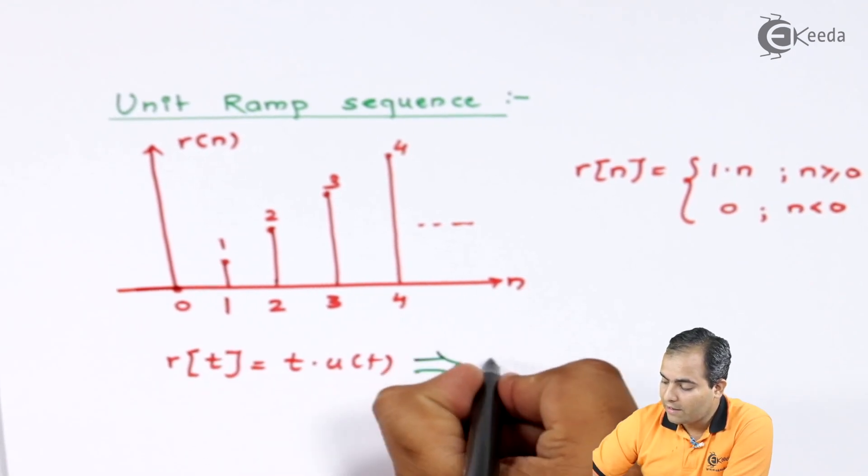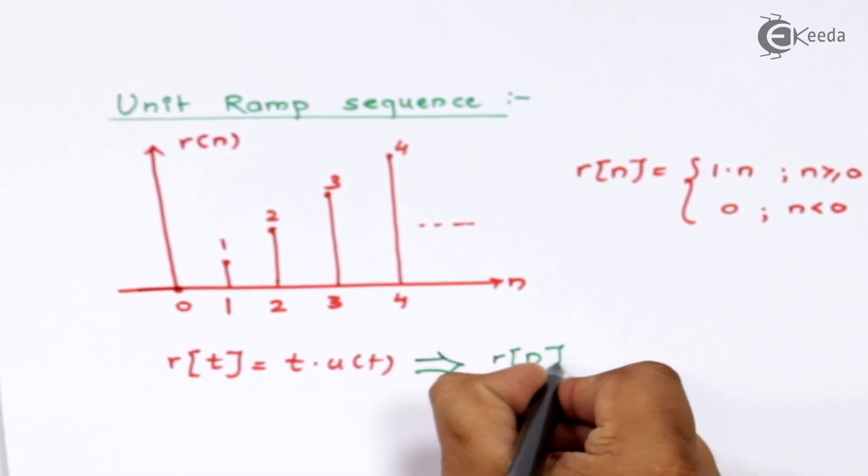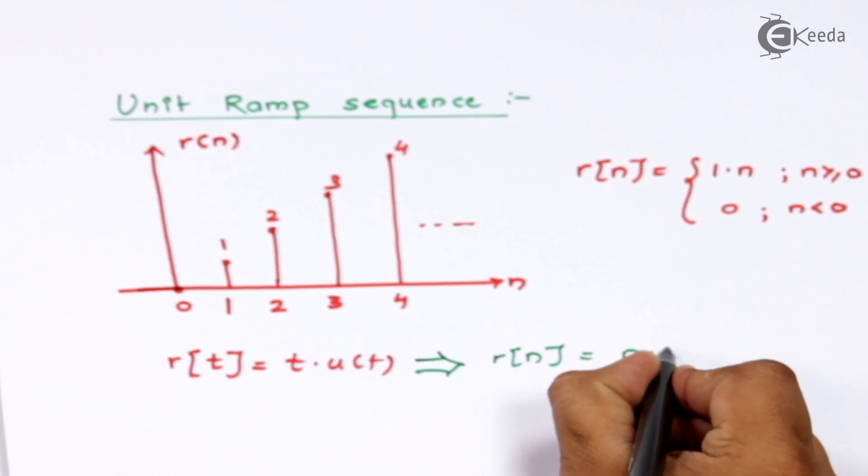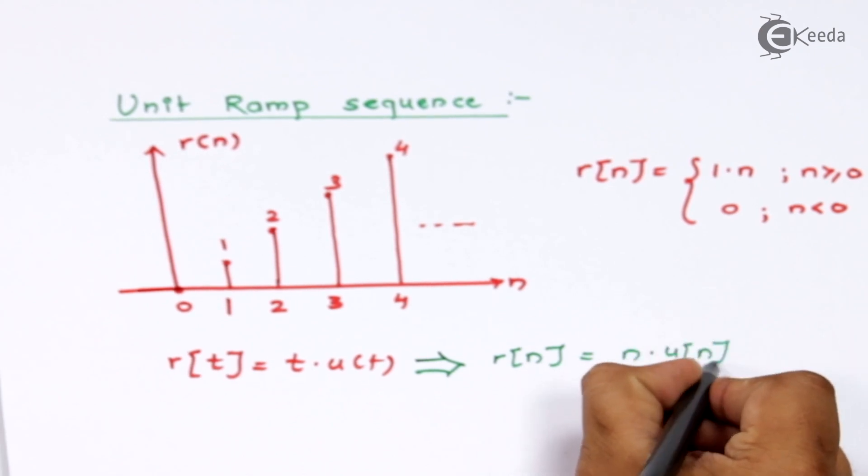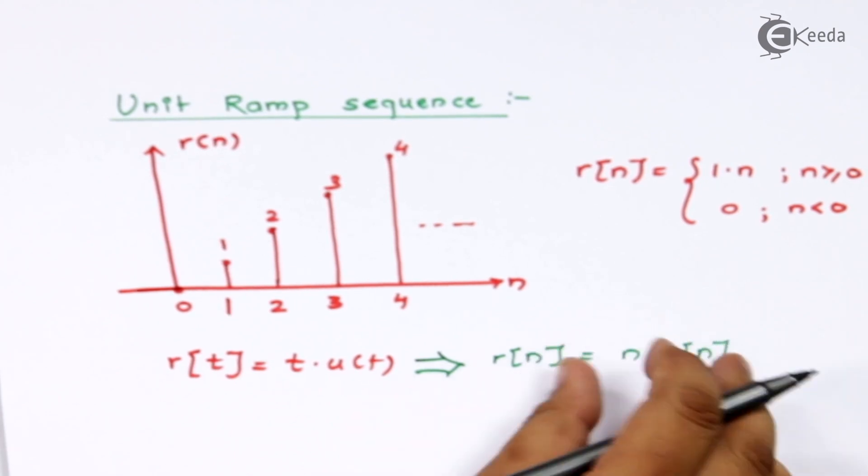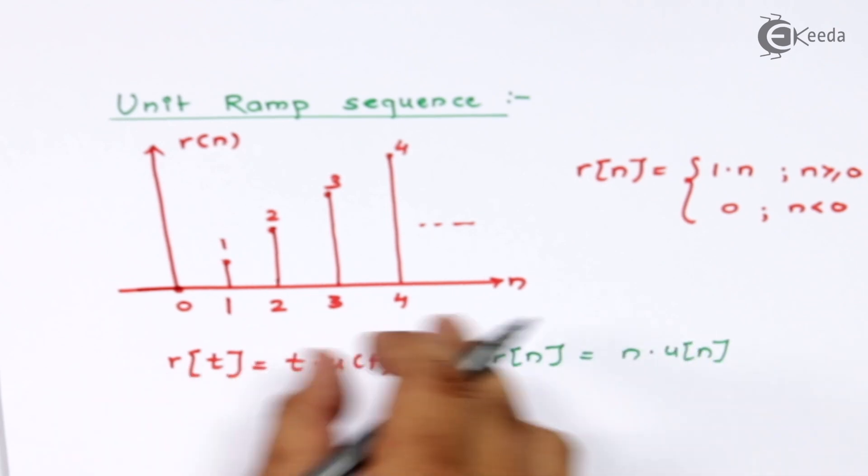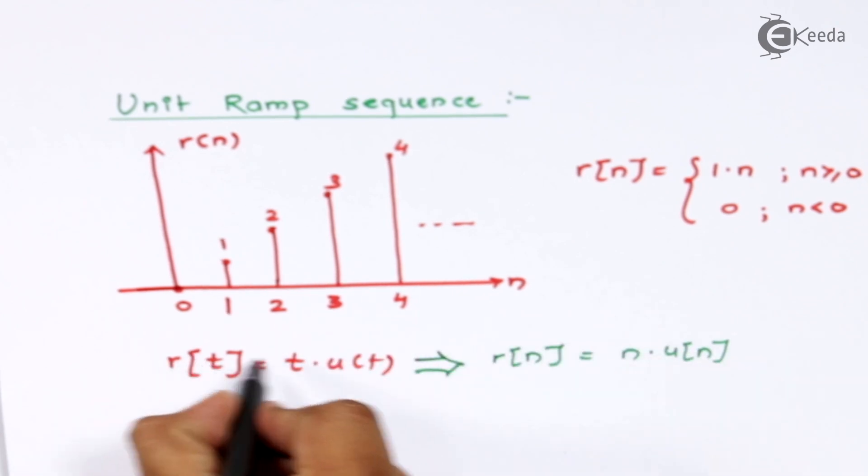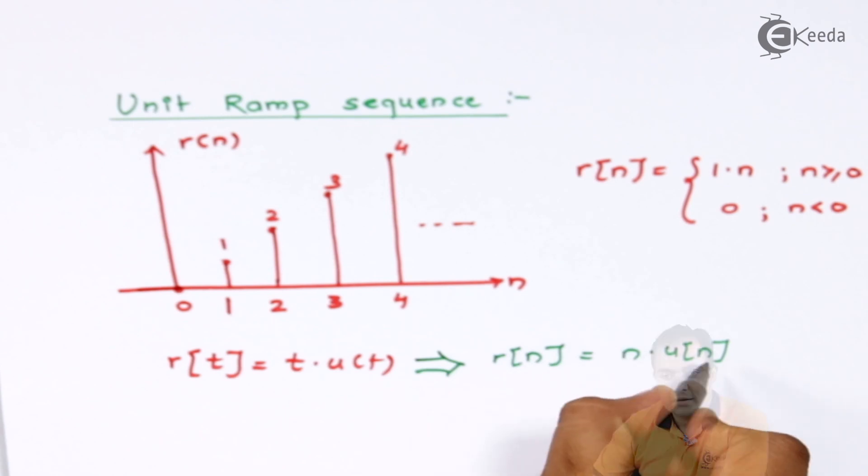it is represented by r(n) = n·u(n). This is the way to represent this continuous time function in discrete time. Just replace all t by n. So you can obtain r(n) or ramp wave using unit step function.